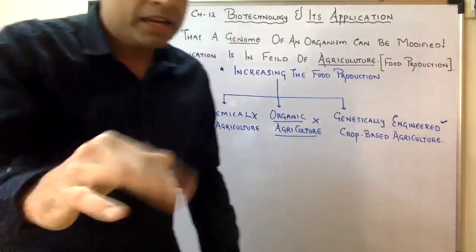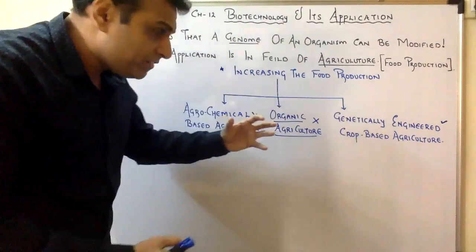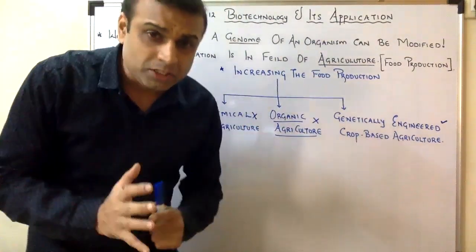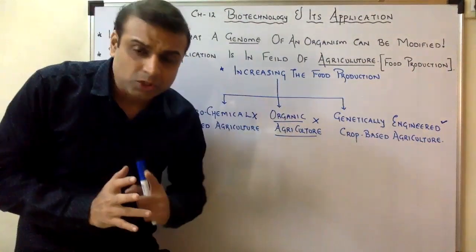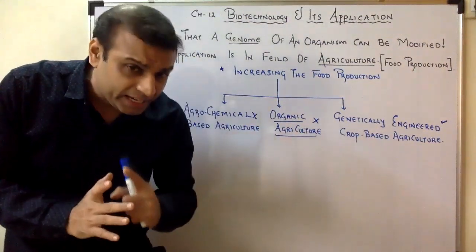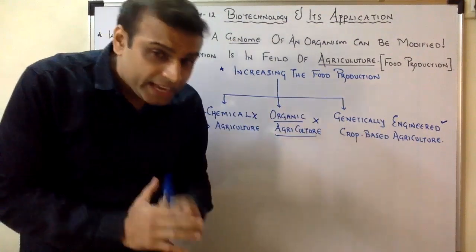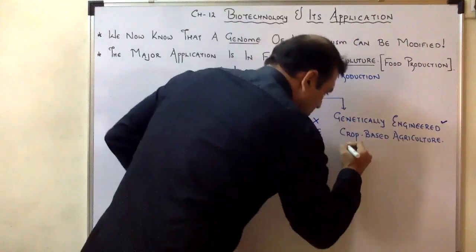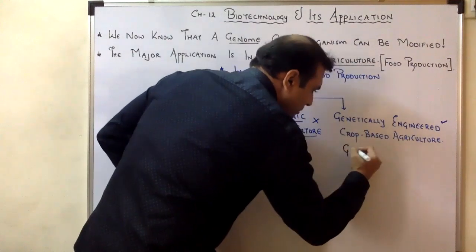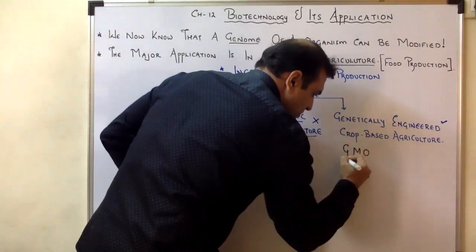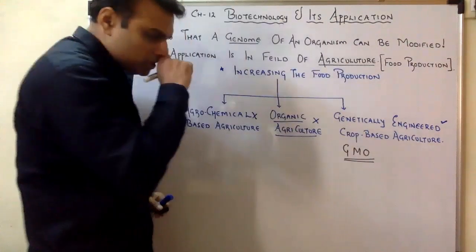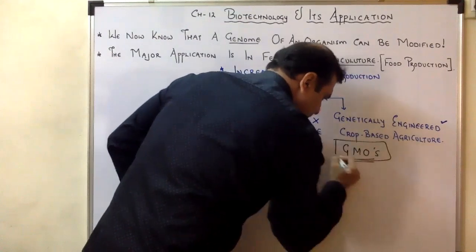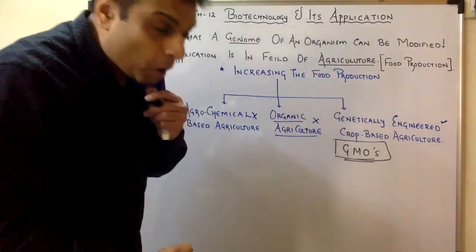This can happen by modifying the genes of these organisms. Today we have modified plants, animals, and bacteria. These organisms whose genes have been modified are called Genetically Modified Organisms, or GMOs. GMOs are very important because they have given us a lot of things we didn't have before.